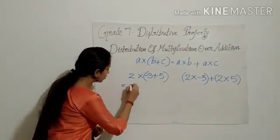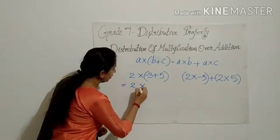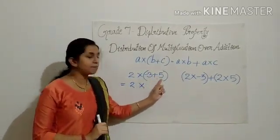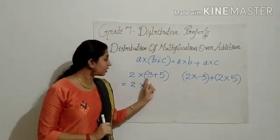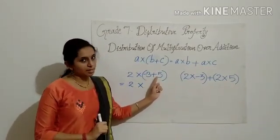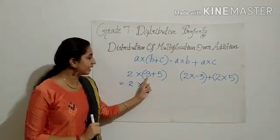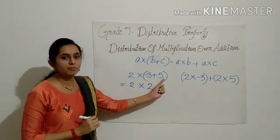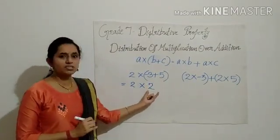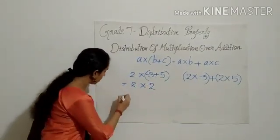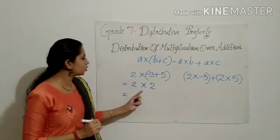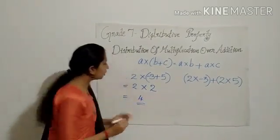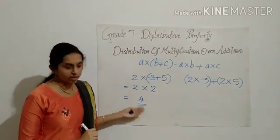2 into what is negative 3 plus 5? Negative 3 plus 5 — they are of different signs, so we have to subtract and put the bigger number's sign. 5 minus 3 is 2. Here 5 is the bigger number, it is positive, so the answer is just 2. So what is the answer? 2 into 2, that is equal to 4. So the LHS part, we got the answer as 4.